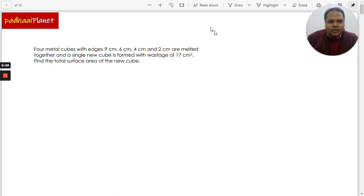Hi, welcome to Padai Planet. In this question we have to solve this particular problem. Four metal cubes are there and the edges of these four metal cubes are given, which is like 9 centimeters, 6, 9, 6, 4, and 2 centimeters.